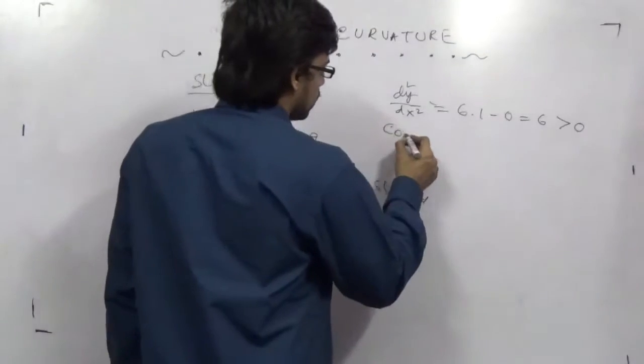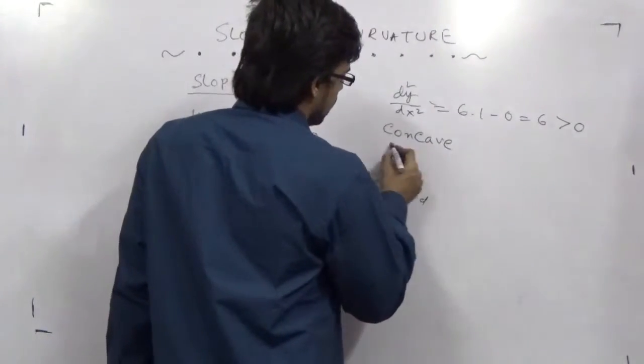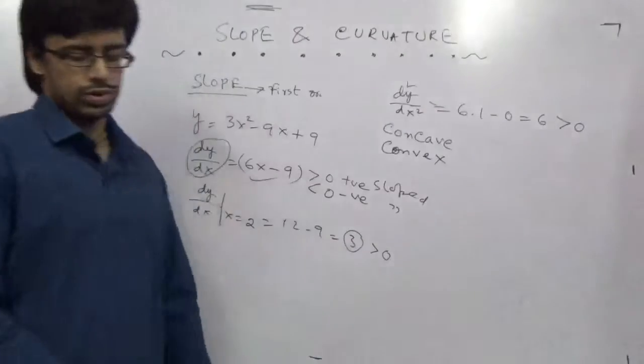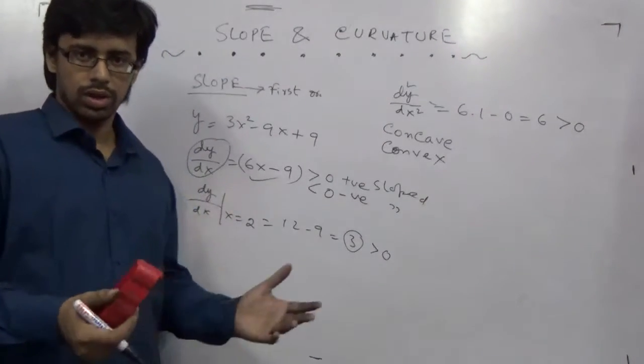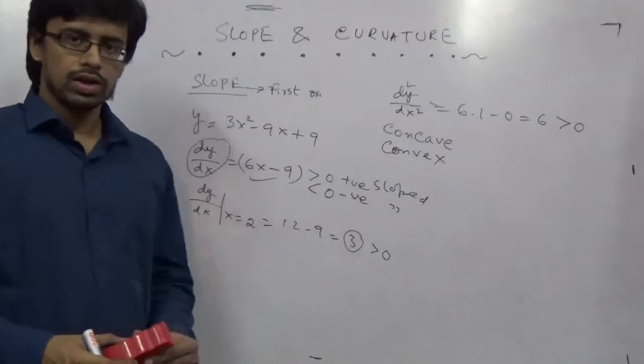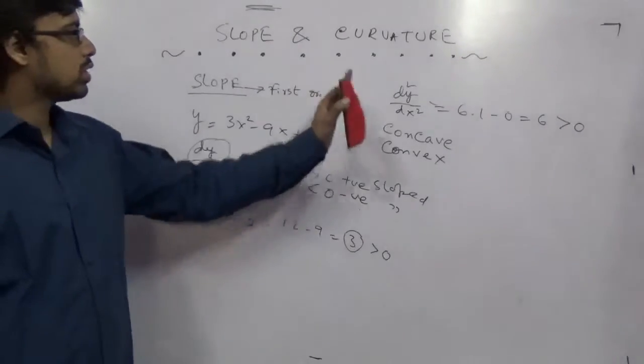One is concave, another one is convex with respect to the origin. With these two, we can find out the structure by utilizing the second order condition. So this is all about curvature.